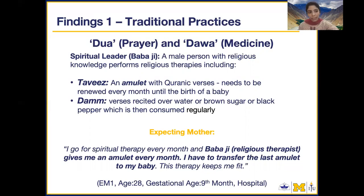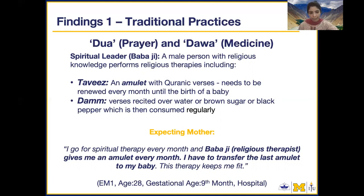The first type is an amulet — a piece of paper with Quranic verses written on it, which they give to the expecting mother. The second is dum, which is the recitation of Quranic verses blown over water or sugar, which is then given to the expecting mother to consume regularly throughout pregnancy.